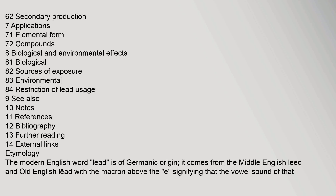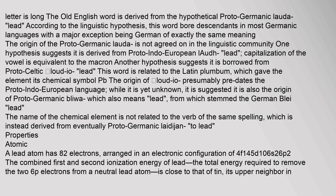The modern English word 'lead' is of Germanic origin. It comes from the Middle English 'lead' and Old English 'lead', with the macron above the 'e' signifying that the vowel sound is long. The Old English word is derived from the hypothetical Proto-Germanic 'lauda'. This word bore descendants in most Germanic languages, with a major exception being German. The origin of Proto-Germanic 'lauda' is not agreed on; one hypothesis suggests it is derived from Proto-Indo-European 'laudh', another suggests it is borrowed from Proto-Celtic 'laudio'.